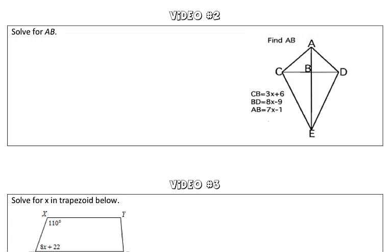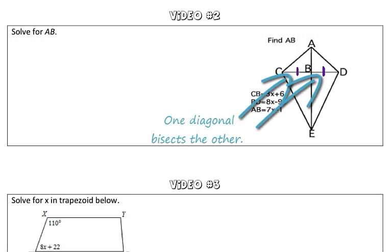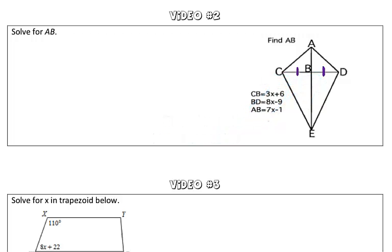We have to think about what properties we know about kites. In general, for kites, we know that one diagonal bisects the other. So segment CB is congruent to segment BD, and this information will help us solve this problem.